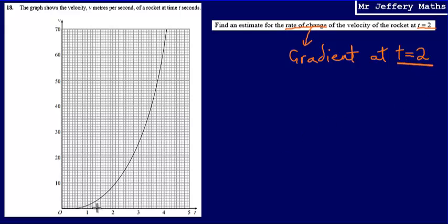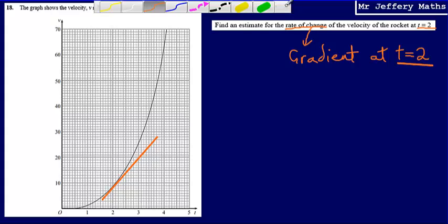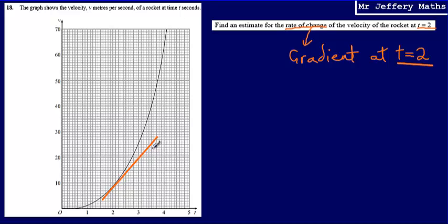So a tangent is just a line which just touches the graph at a particular point. So we're going to draw a straight line at where t equals 2. So it just has to just touch the graph. You'll need to do this with a ruler and it should look something like that, just touching at t equals 2. So it's just touching that graph at t equals 2. And now what we're going to do is figure out what is the gradient of this tangent that we've just drawn.